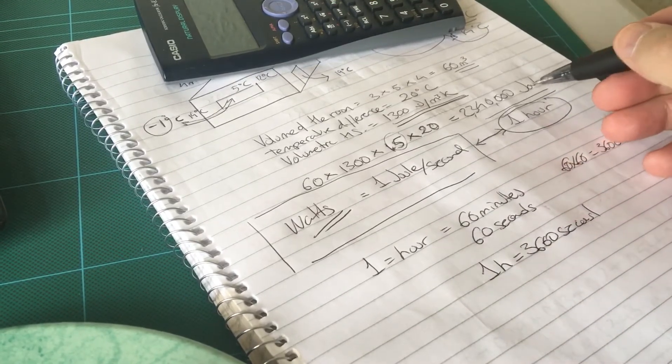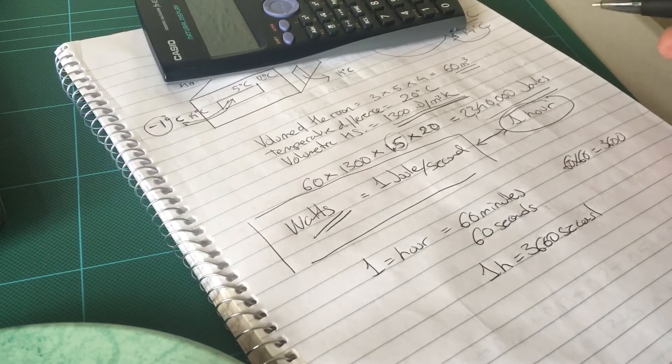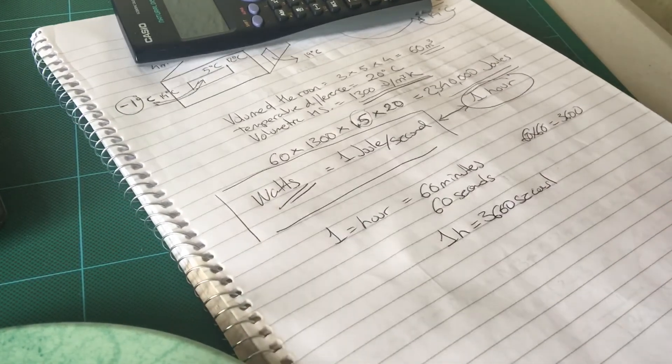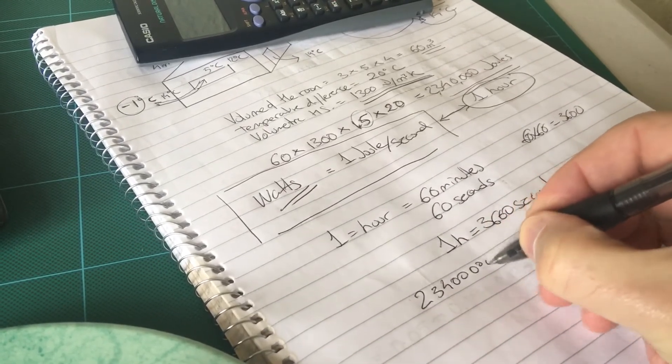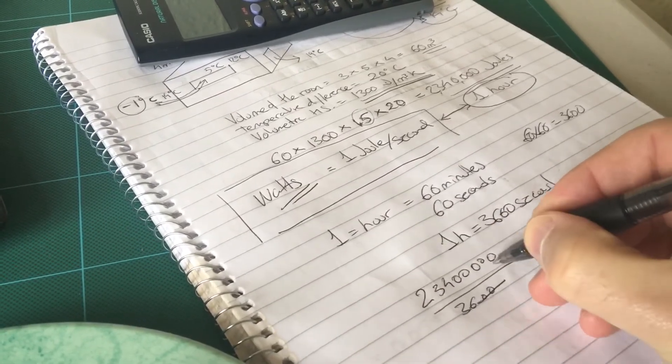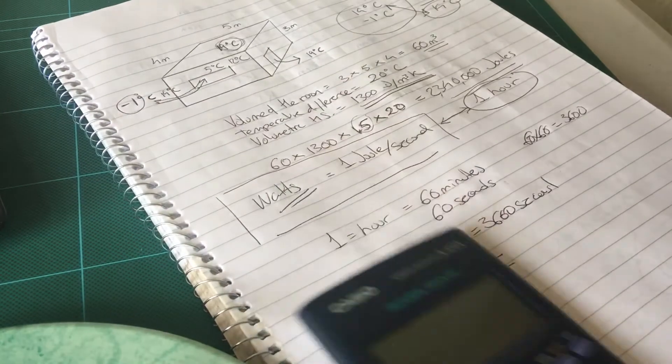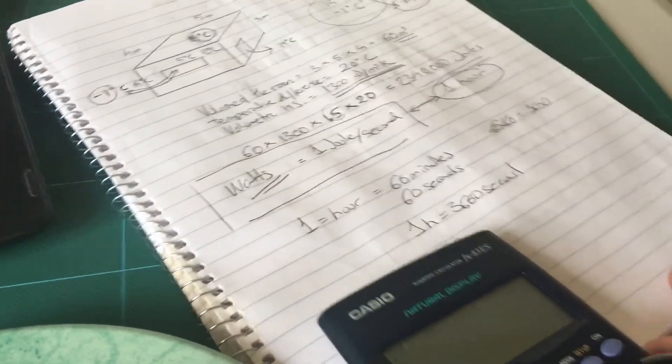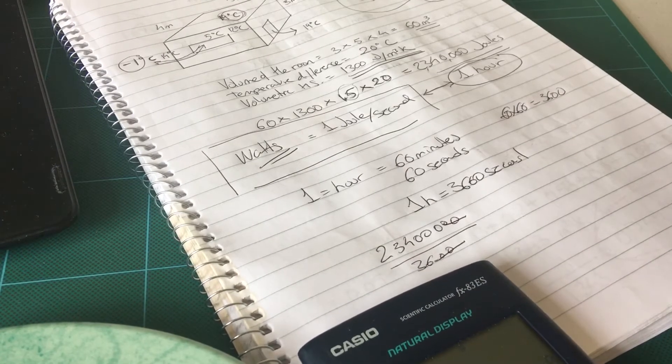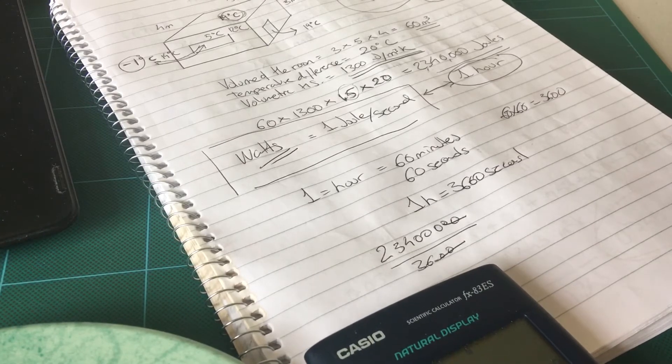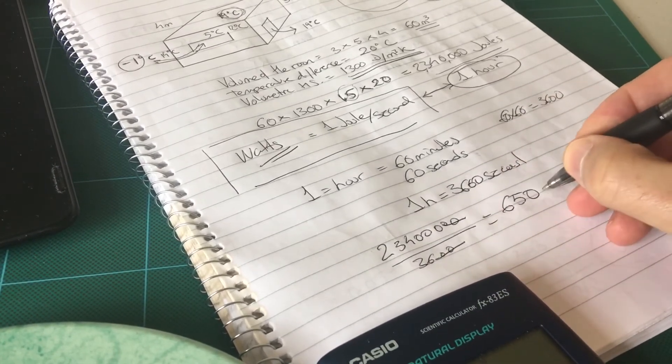So if I have all these millions in joules in an hour how many will I have in a second. Well let's find out, 2,340,000 divided by 3600. I'm going to get rid of these two zeros and I'm going to use the calculator for this. 234,000 divided by 36 which equals six hundred and fifty watts.